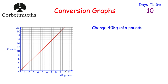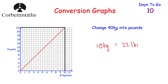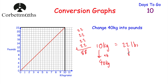So I'm going to find how many pounds is in 10 kilograms first. Going to 10 kilograms, up to the line, then across — that's 22 pounds. So 10 kilograms equals 22 pounds according to our graph. Now 40 kilograms is four lots of 10 kilograms, so we multiply 22 by 4, which gives 88 pounds. You could also add 22 four times. Either way, 40 kilograms is approximately 88 pounds.